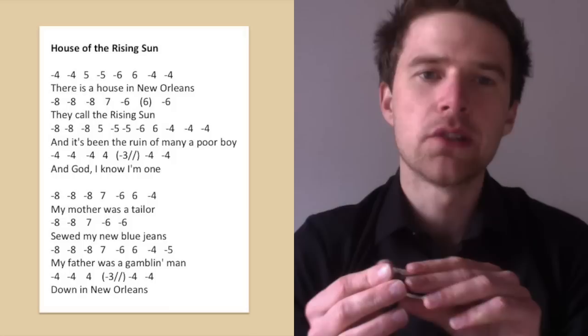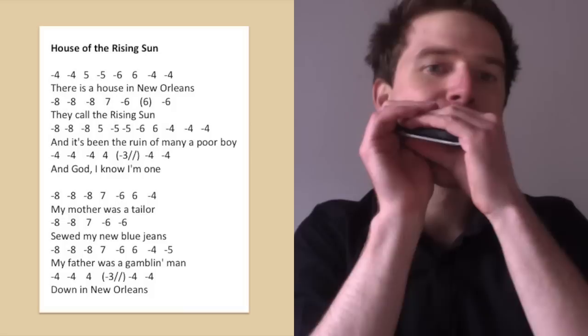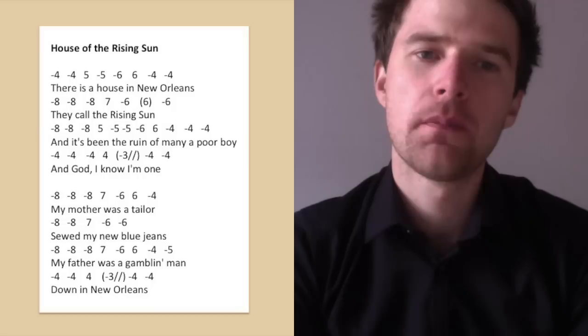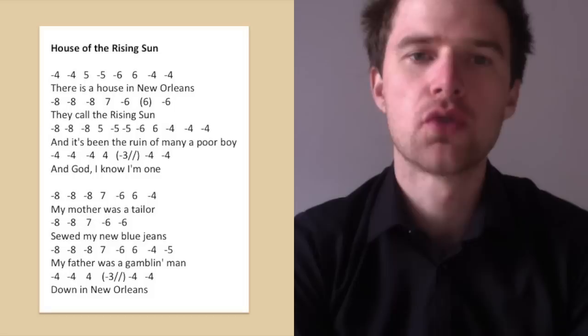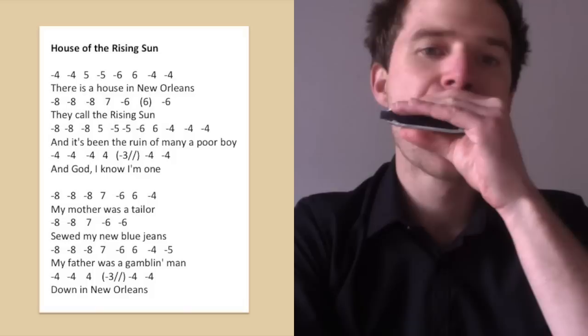I've tabbed out two verses. Let's start with the first one and I'll just play the line and then we'll go through the tab. So the tab for the first line: four draw, four draw, five blow, five draw, six draw, six blow, four draw, four draw. And that's 'there is a house in New Orleans.' I'll just play that once more. And again once more, just have a good look.